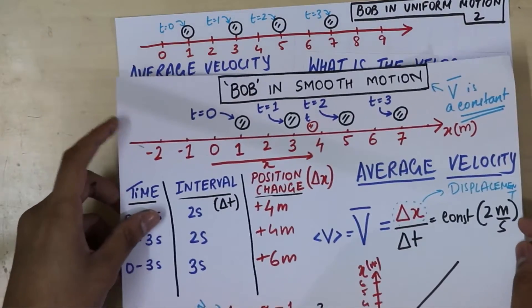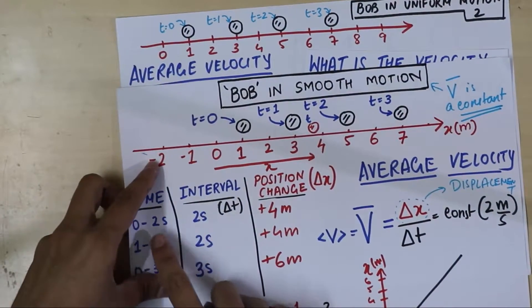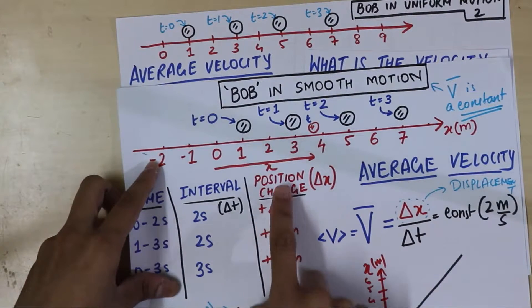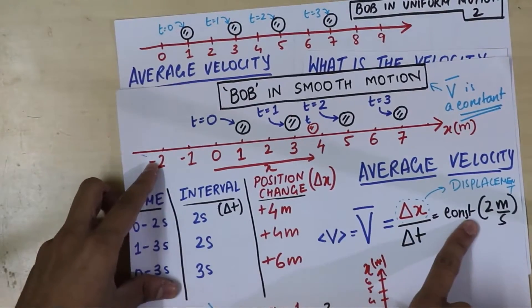Here it is. Uniform motion was this. Regardless of what time interval you take, you will always find the position change in such a way that the ratio remains a constant.